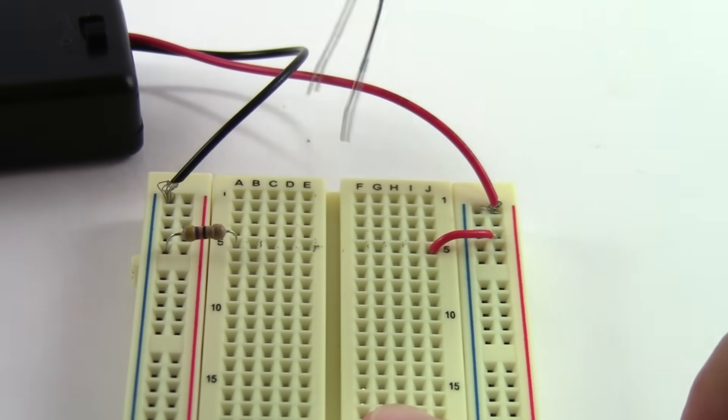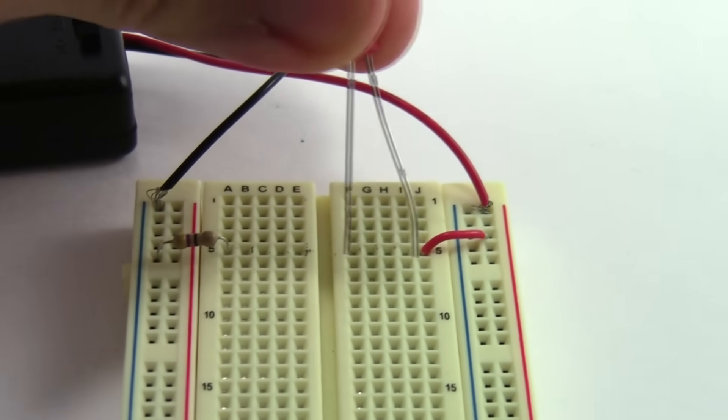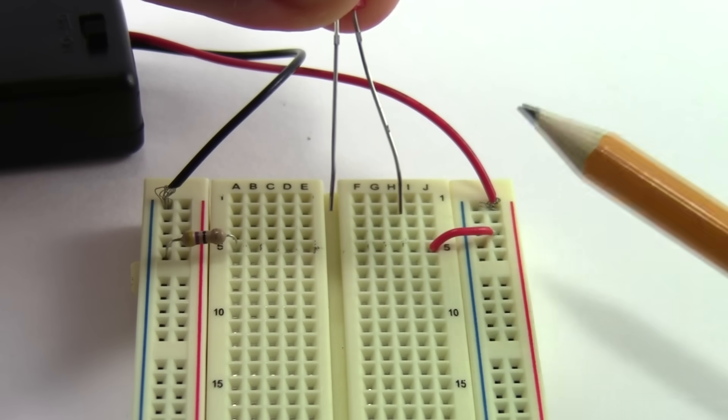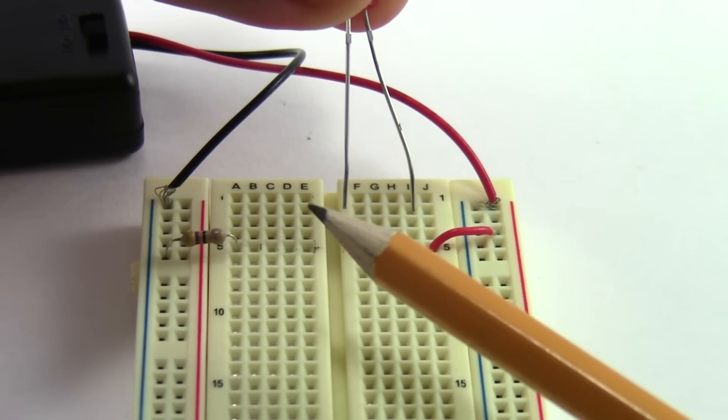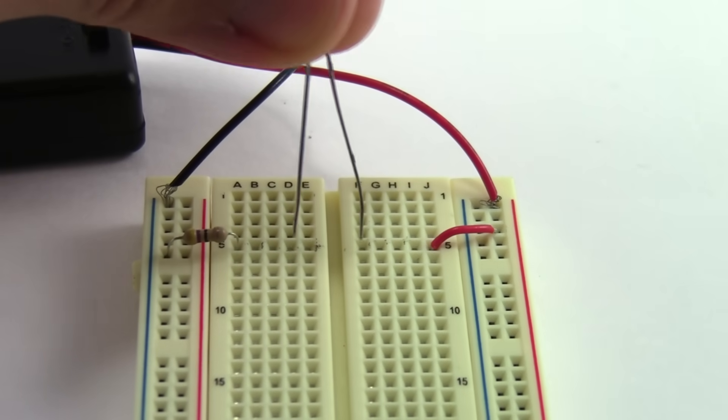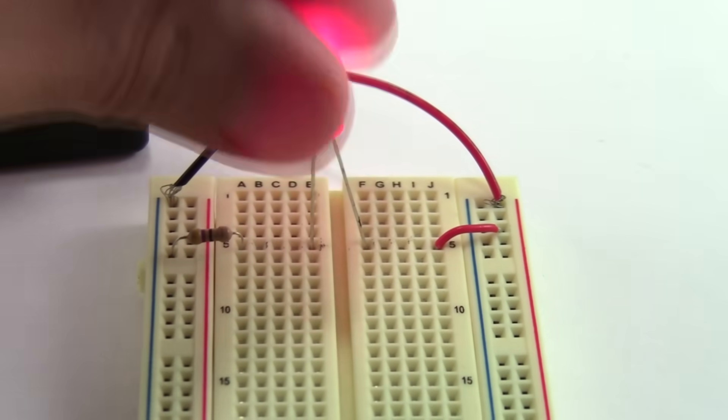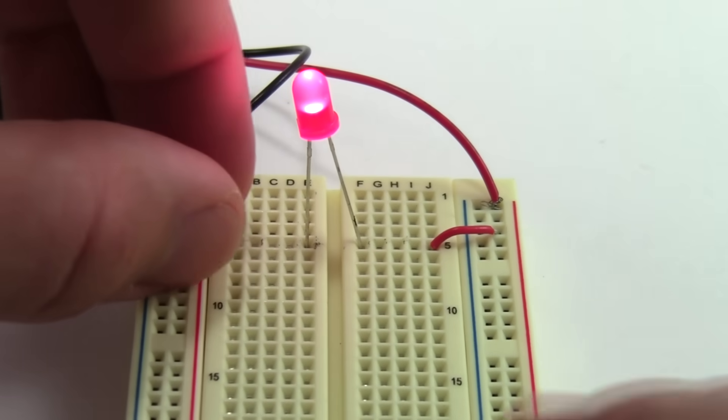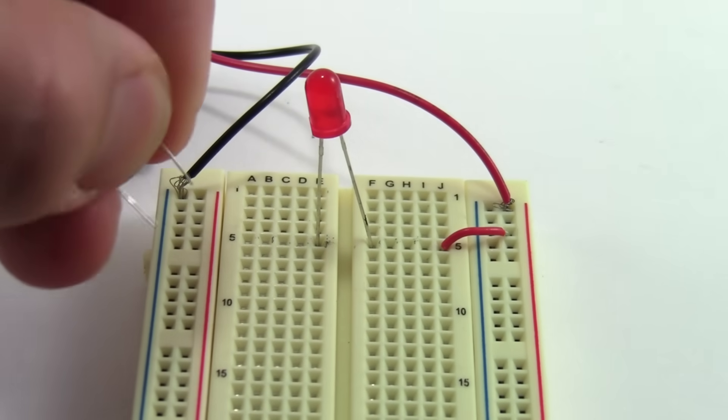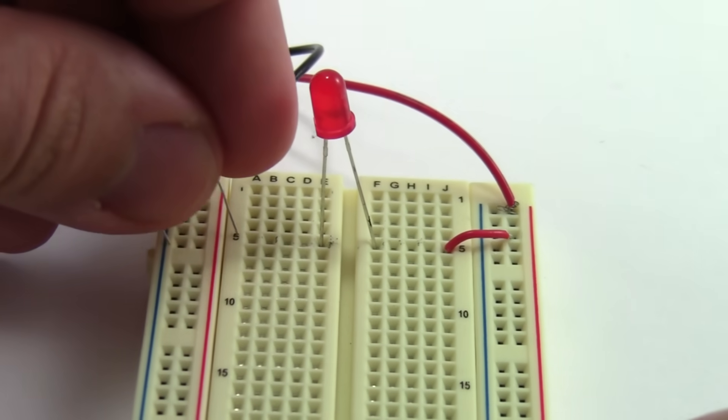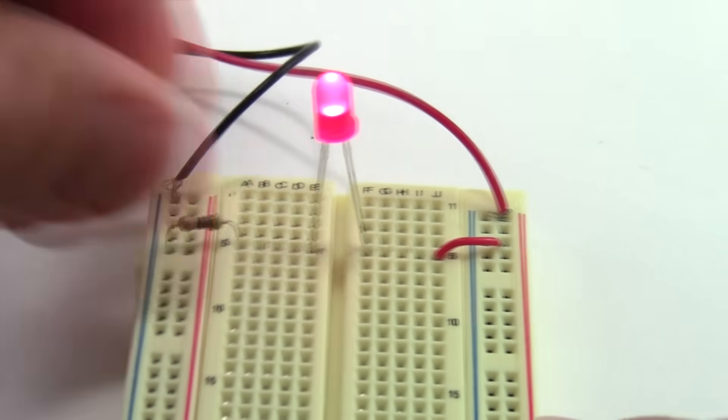If you look closely at an LED, you'll see that the two legs are actually slightly different lengths. The longer leg is the positive side and has to be connected to the battery pack's red lead. The shorter leg is the negative side and needs to be connected to the black lead. The resistor, on the other hand, does not have a polarity associated with it, so I can flip the resistor around and the circuit will still work just fine.